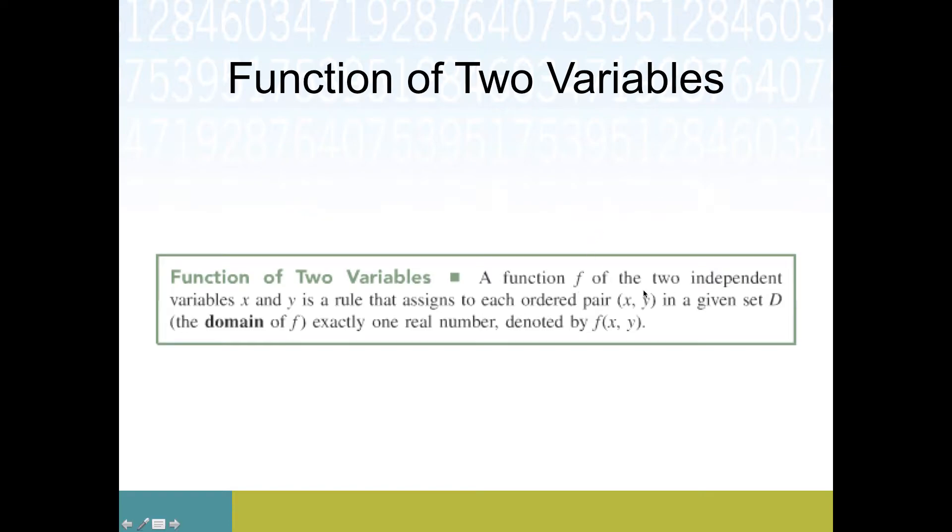We're going to start with just two variables because that's the most common scenario. So two independent variables, we're going to call them x and y. This might feel a little weird because you're used to thinking of y as the output variable. But both of these are inputs, and we're going to think of the domain the exact same way we normally would.